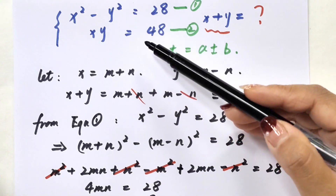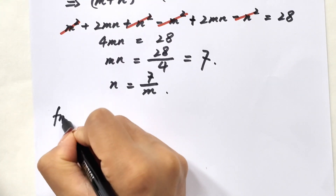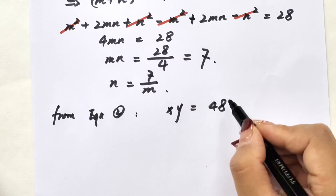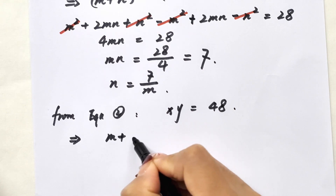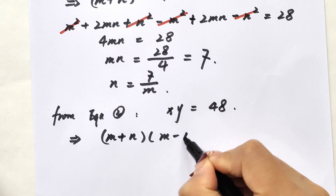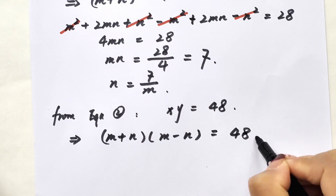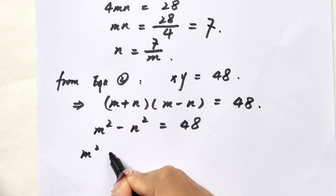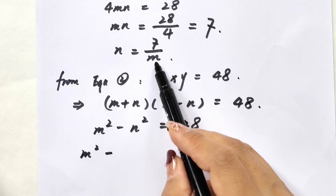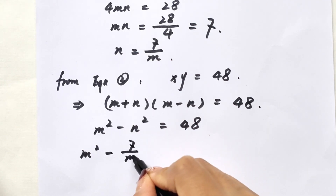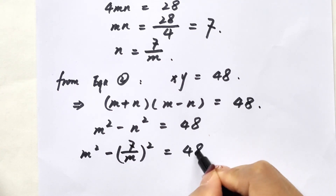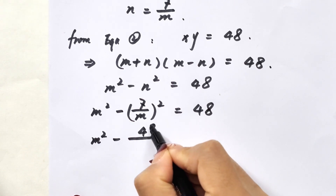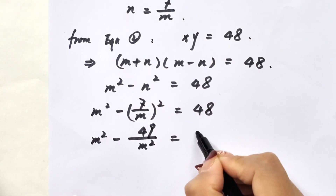Now we look at equation 2. From equation 2, x times y equals 48 is the same as (m+n)(m-n) equals 48, so m squared minus n squared equals 48. Substituting n equals 7 over m gives m squared minus (7/m)² equals 48, which is m squared minus 49 over m squared equals 48.